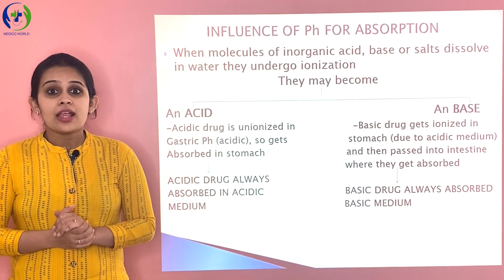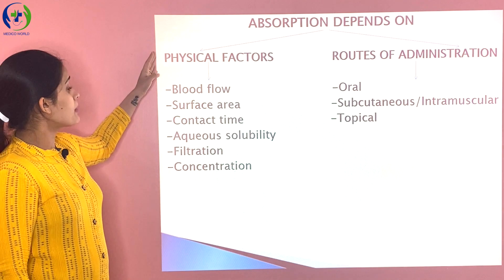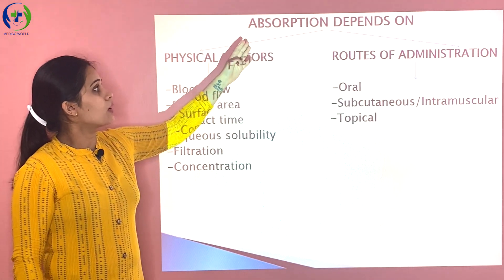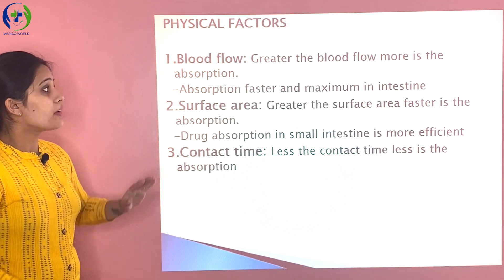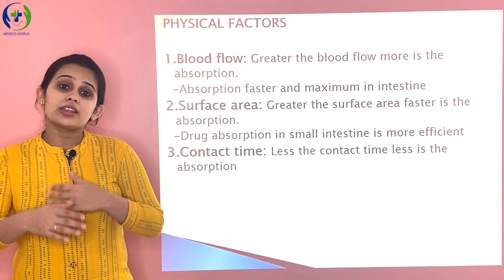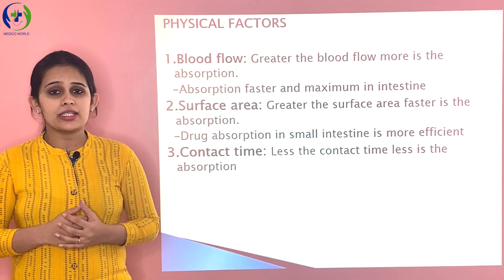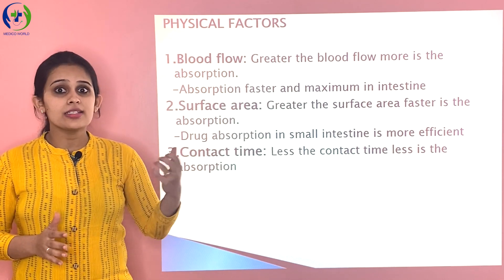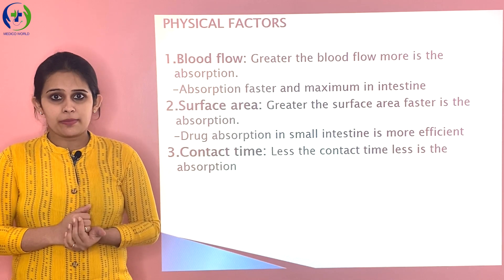There are various other factors which influence absorption or vary the rate of absorption. Physical factors include blood flow, surface area, contact time, aqueous solubility, filtration, and concentration; absorption can also vary based on the route of administration. Regarding blood flow: greater the blood flow, faster the absorption. The stomach has a lower blood supply compared to the intestine, so drugs are more rapidly absorbed in the intestine. Nowadays drugs are enteric coated, which prevents the drug from dissolving in the stomach.